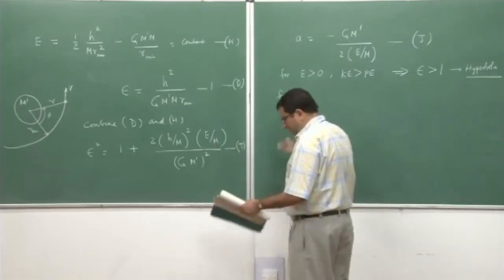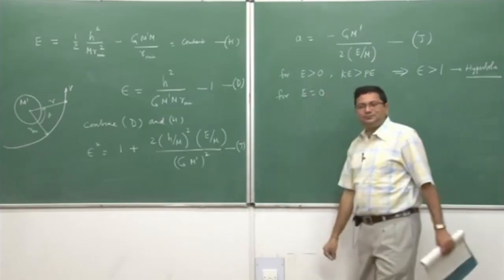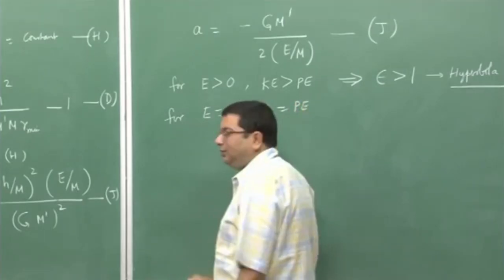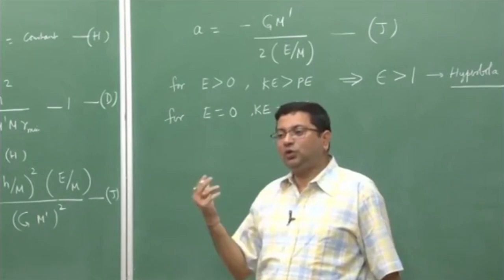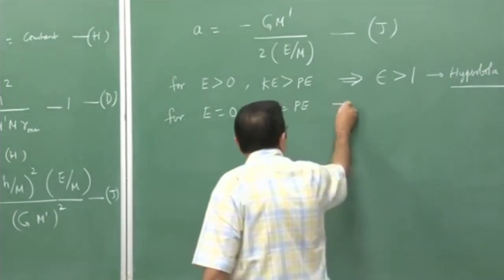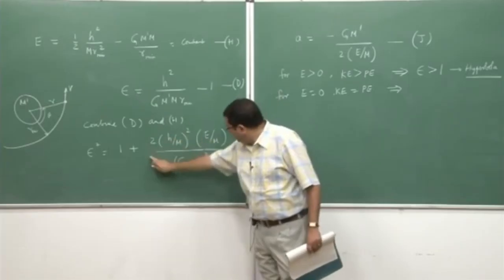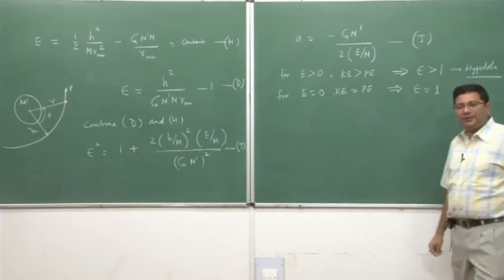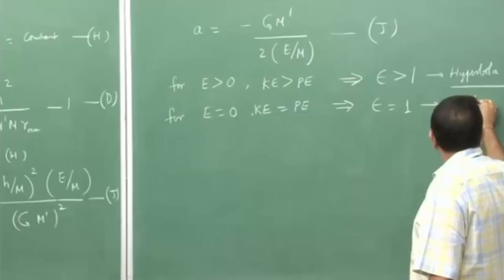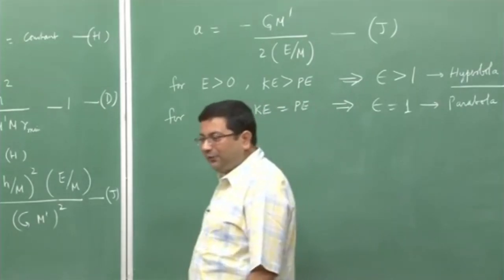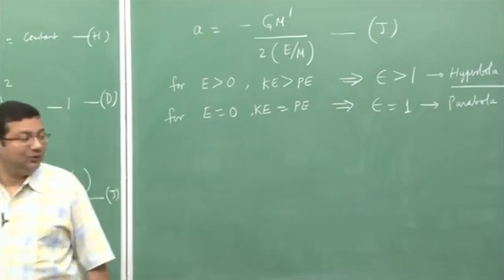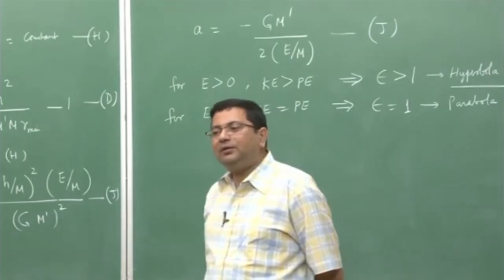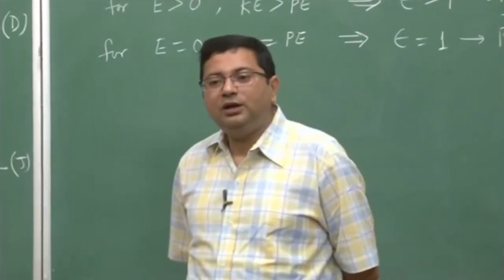For E equal to 0, the orbital energy is zero, meaning kinetic energy equals potential energy — the two energy components are balanced. In that case, the term in equation J is zero, so epsilon equals 1, giving us a parabola. We showed that a parabola is also a flyby; the vehicle would not be captured in orbit. So E equal to 0 means the vehicle will just fly by and will not be captured by the gravitational force of the larger body.